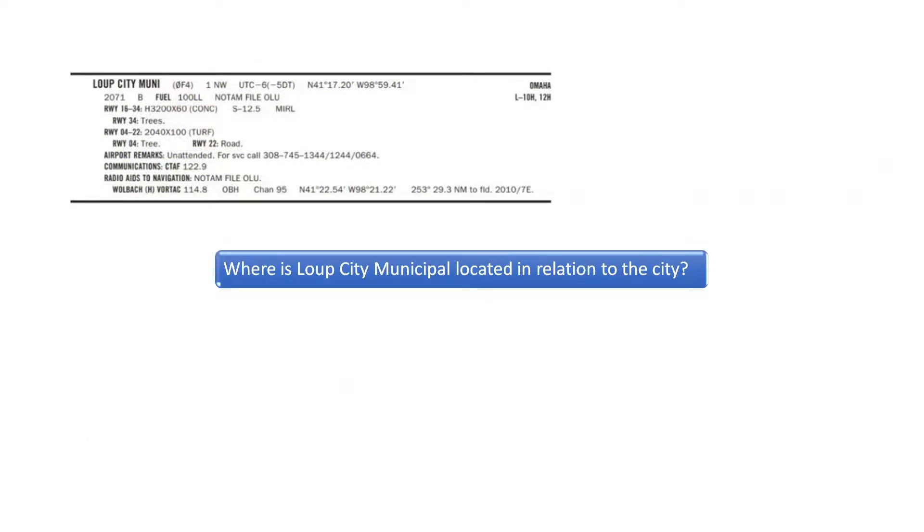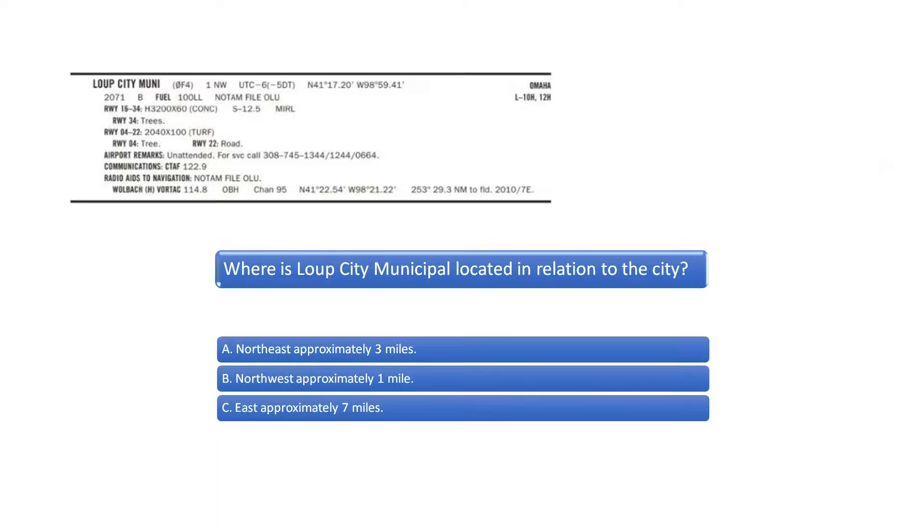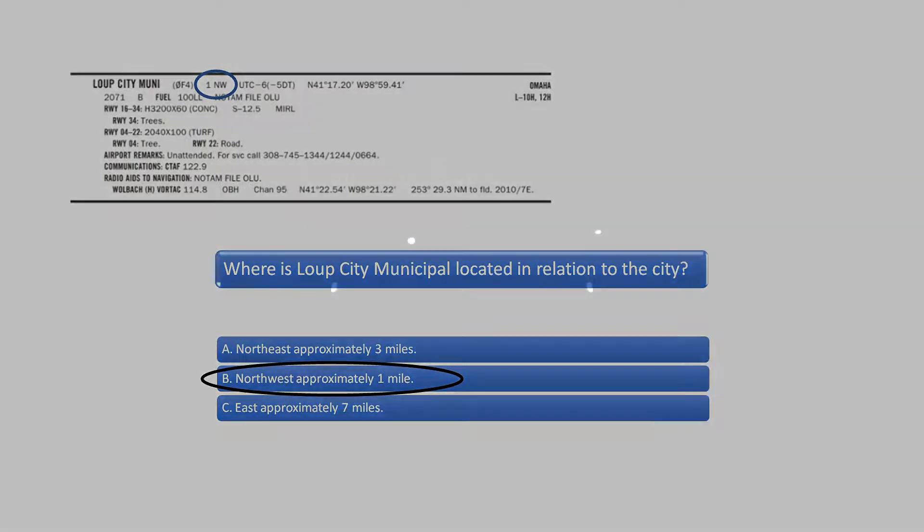Where is Loop City Municipal located in relation to the city? You can find the distance from the city in the top of the chart. See the number 1 followed by NW. This indicates the airport is 1 mile northwest of the city. The correct answer is therefore B.